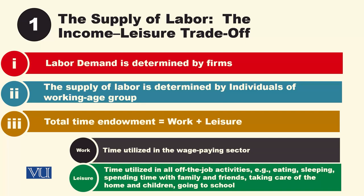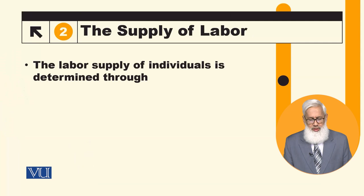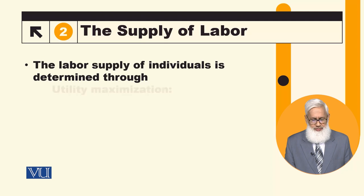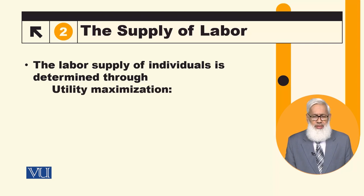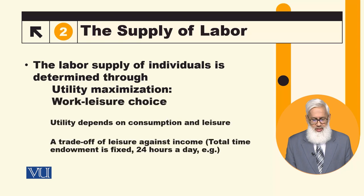Labour supply is basically about how much labour working age group individuals will supply. The key idea is how much labour will maximize utility. Individuals will work based on their utility maximization. Basically, the work-leisure choice determines utility.